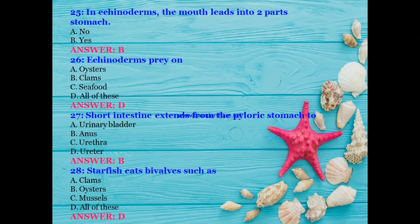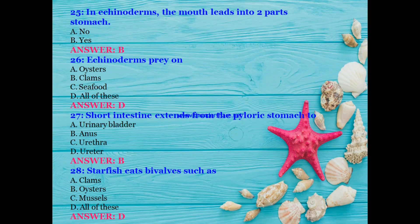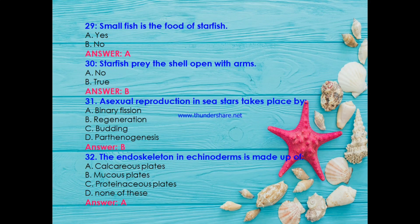In echinoderms, does the mouth lead into two parts of the stomach? Yes. Do echinoderms prey on oysters, clams, seafood, or all of these? The answer is D — all of these. The short intestine extends from the pyloric stomach to: urinary bladder, anus, urethra, or ureter? The answer is B — anus. Starfish eat bivalves such as clams, oysters, and mussels — all of these. Is small fish also food for starfish? Yes.